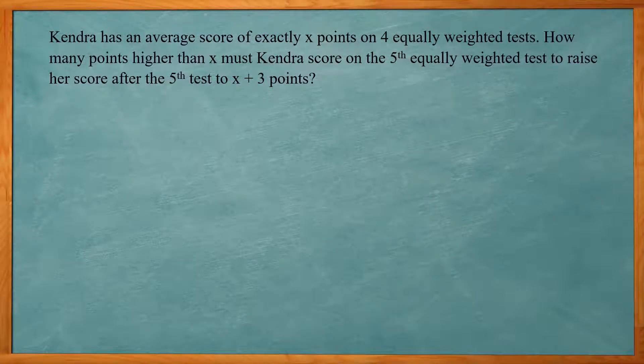So this one says Kendra has the average score of exactly x points on four equally weighted tests. How many points higher than x was Kendra's score on the fifth equally weighted test to raise her score after the fifth test to x plus 3 points? So again, we use our basic formula. So we get x points on each of the four tests. The total will be 4x, 4 times x.